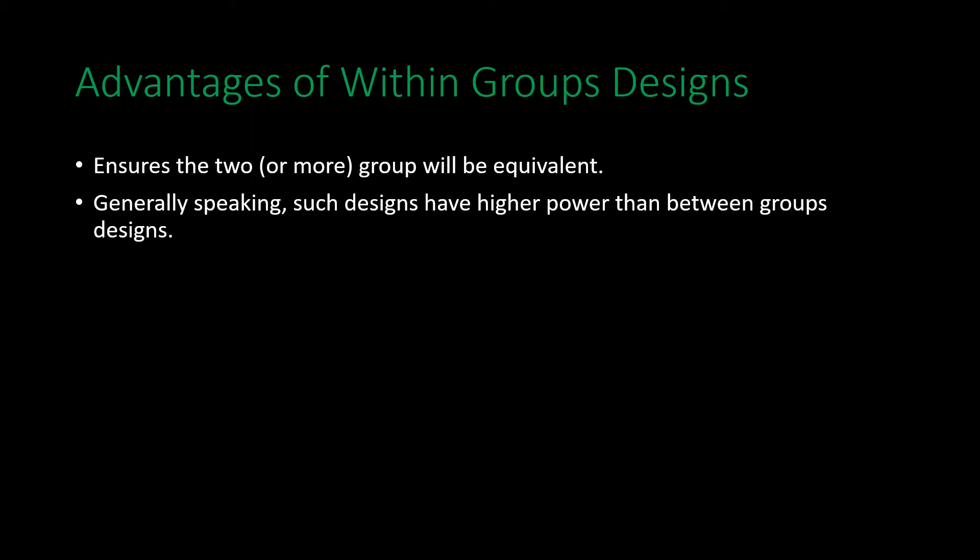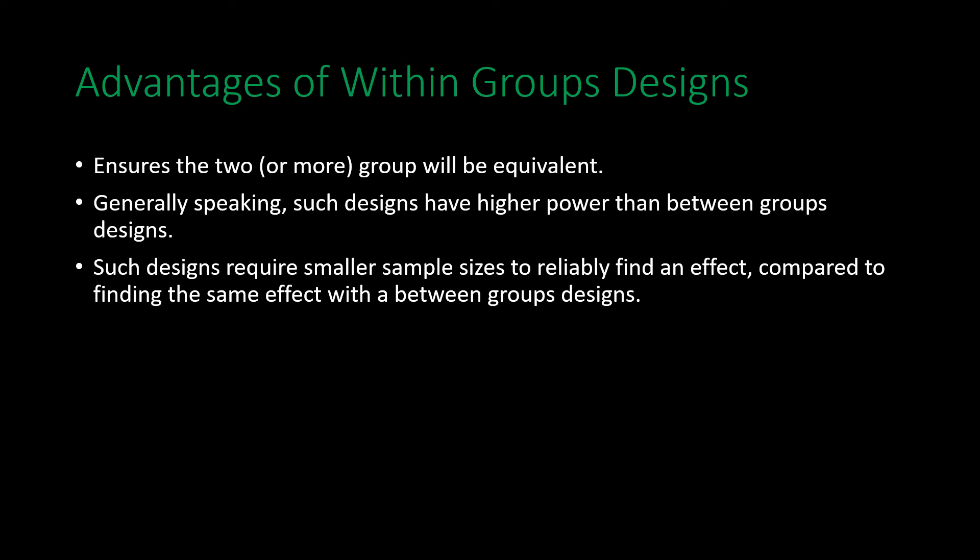A fast person in one group will still be a fast person in the other group. Finally, such designs require a smaller sample size to reliably find an effect compared to between groups designs, because of how the structure is carried out. If comparing two groups of 20 people with a within groups design, you only need 20 people total because they are exposed to both conditions and measured twice.